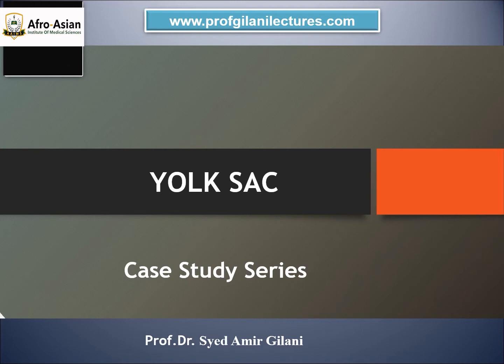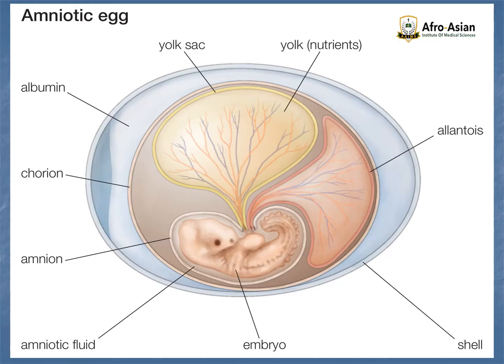The allantois is a small diverticulum which is part of the umbilical cord, connects to the bladder, and acts as a temporary store for fetal excretions. If you look at this diagram, we can see this is the yolk sac and we have got the yolk nutrients inside. This is the allantois.